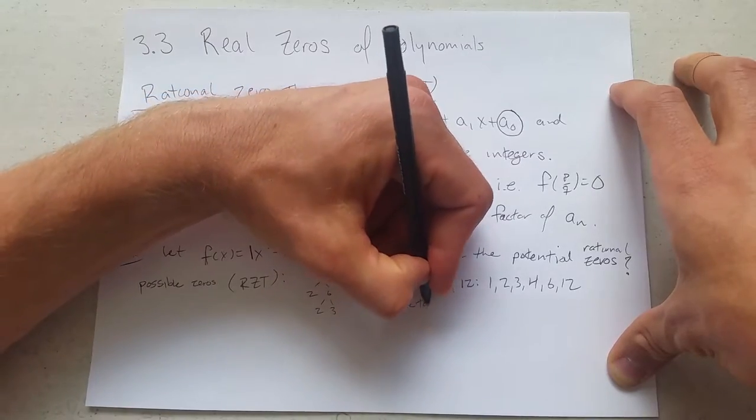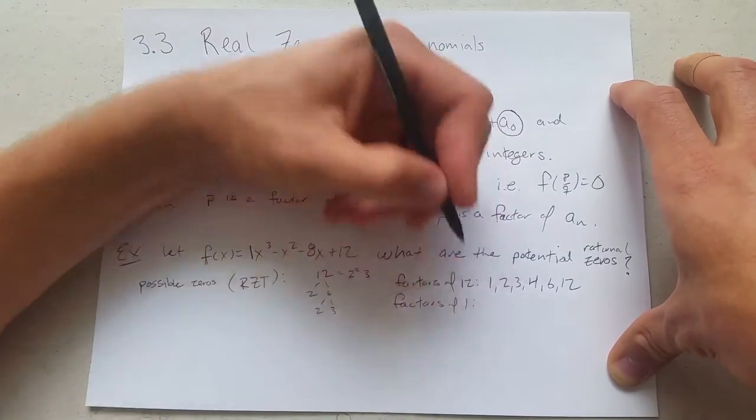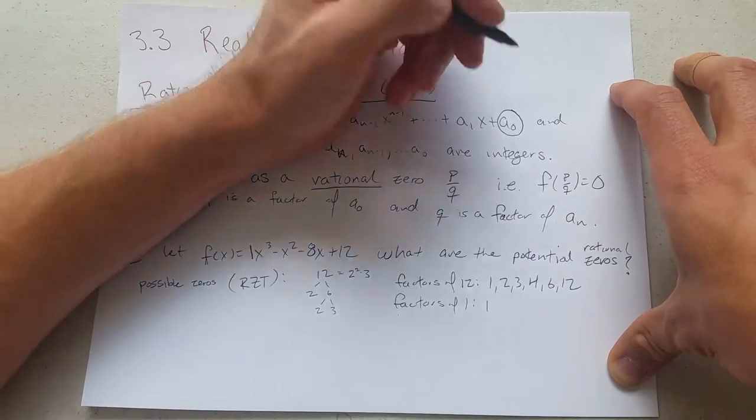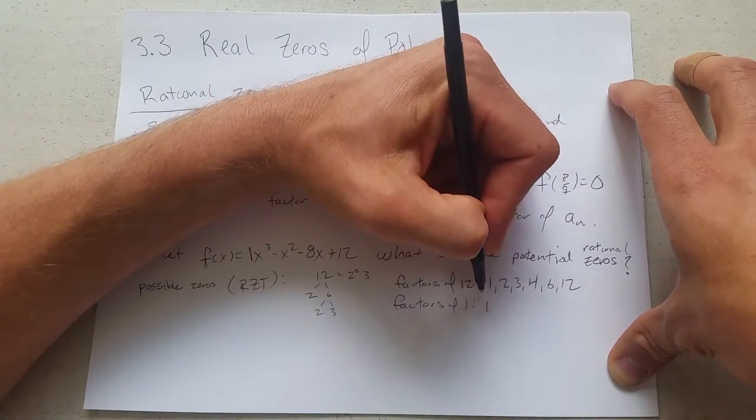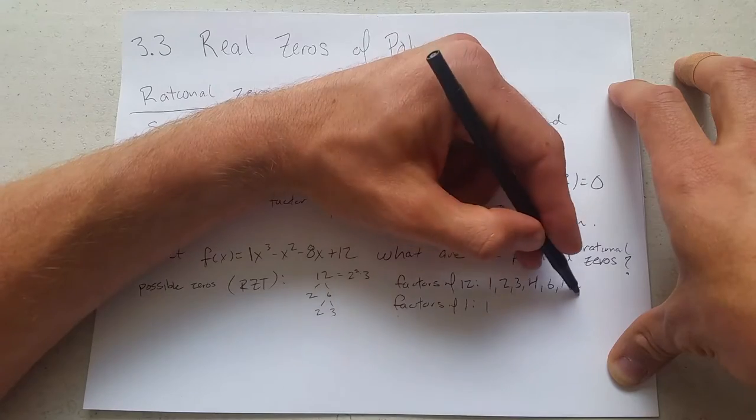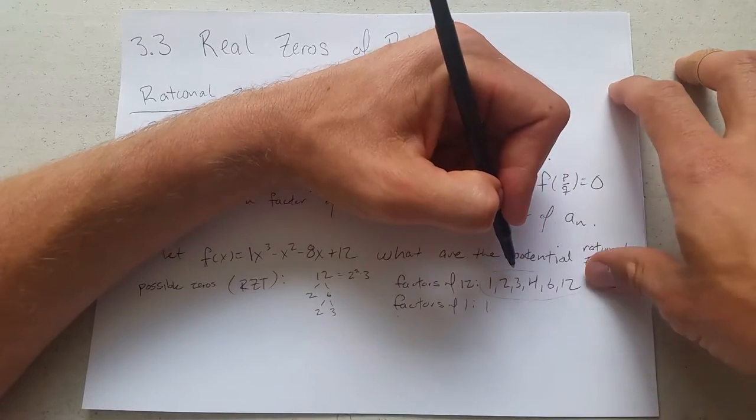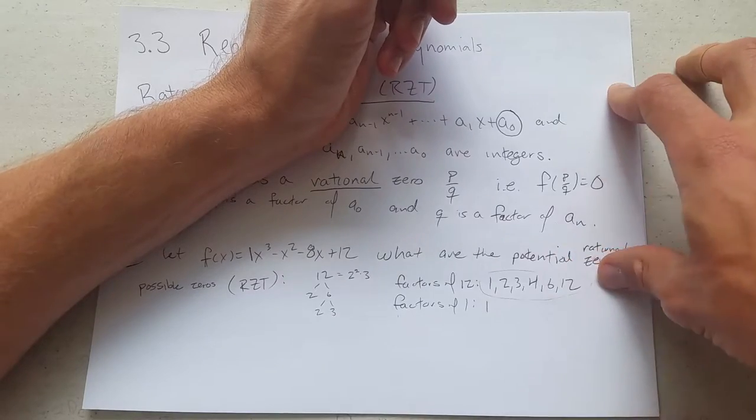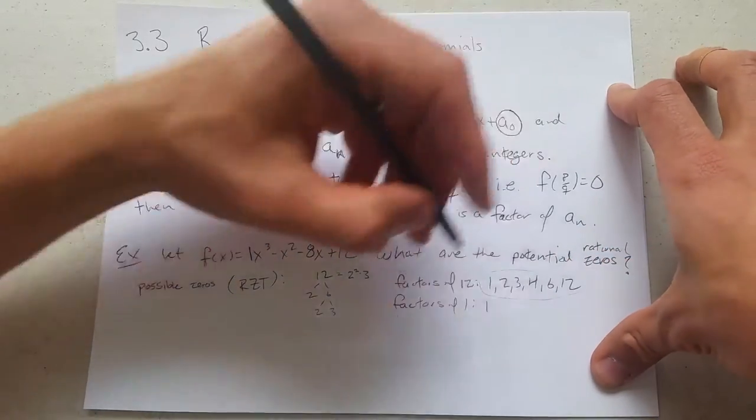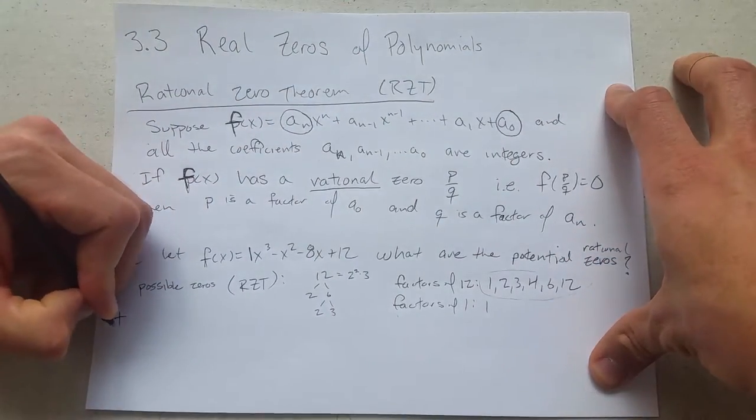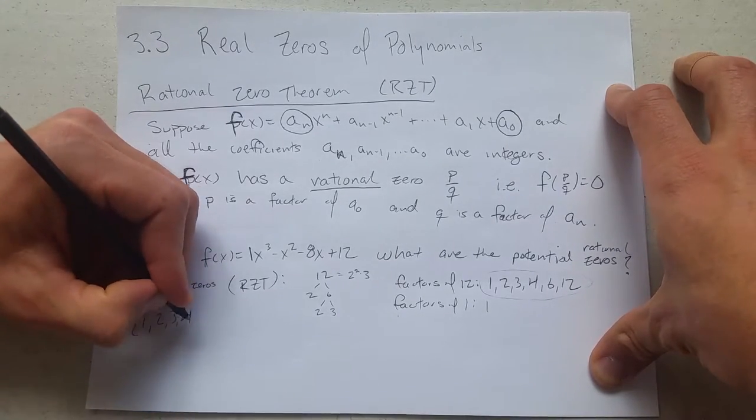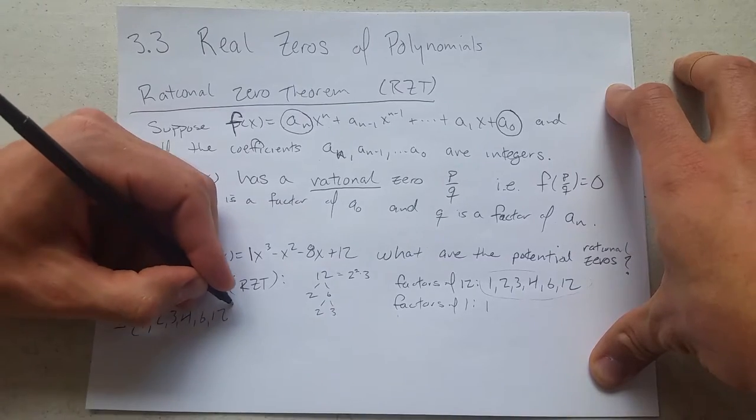Factors of 1 - well, this is pretty easy - just 1. So really, there's going to be no fractions here. This shows this one nicely. So we only need to look at these. We also have to look at negatives. So we could have plus or minus 1, 2, 3, 4, 6, 12.